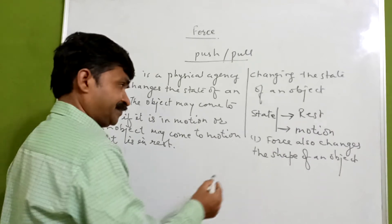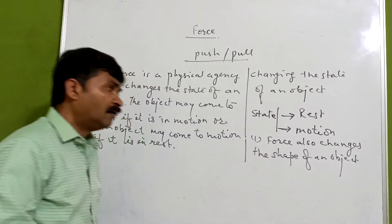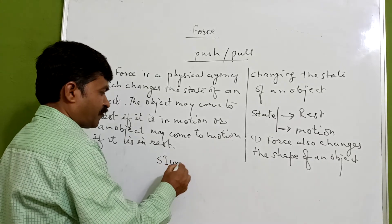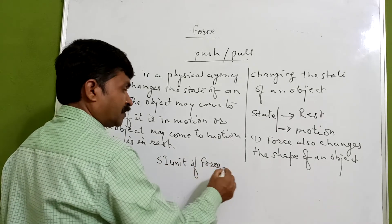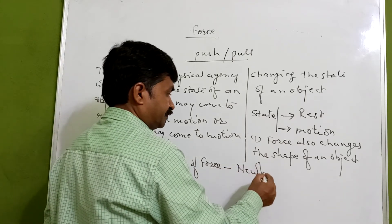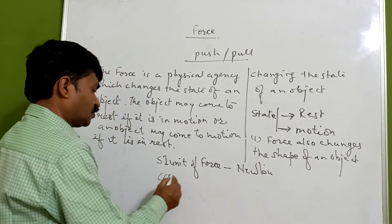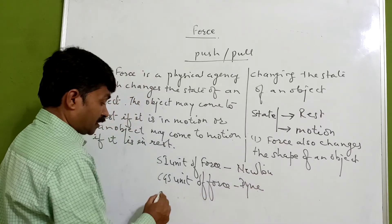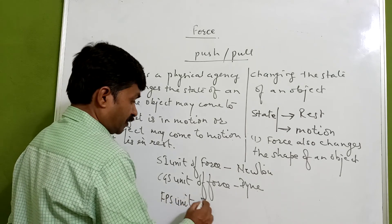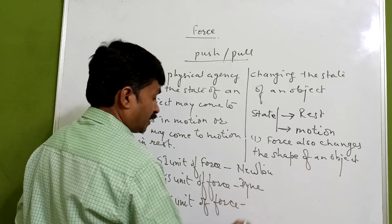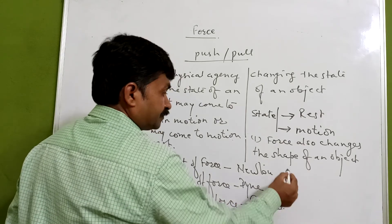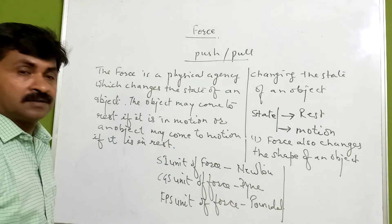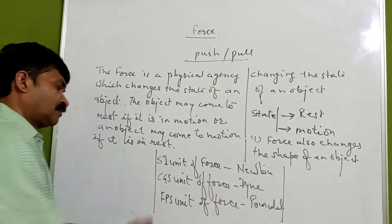Now if we talk about force and its unit — we will discuss this later on also — the SI unit of force is Newton. There is a CGS unit also: the unit of force in CGS is Dyne. And the FPS unit is also there, which is not commonly used, but we must know it — the FPS unit of force is Poundal.